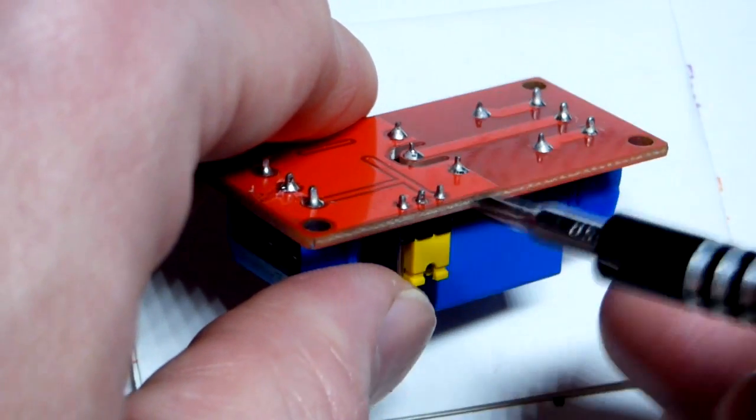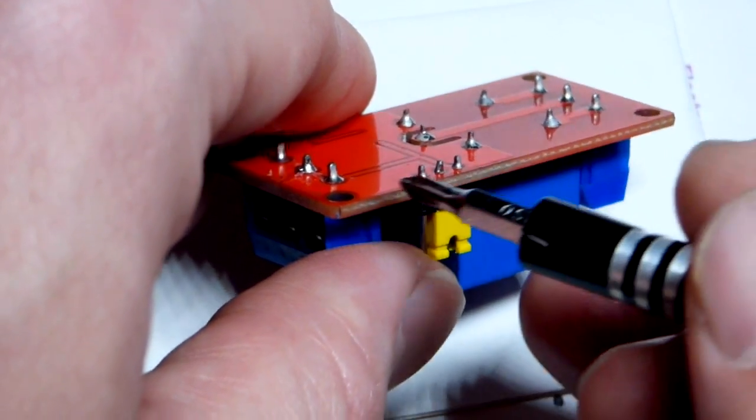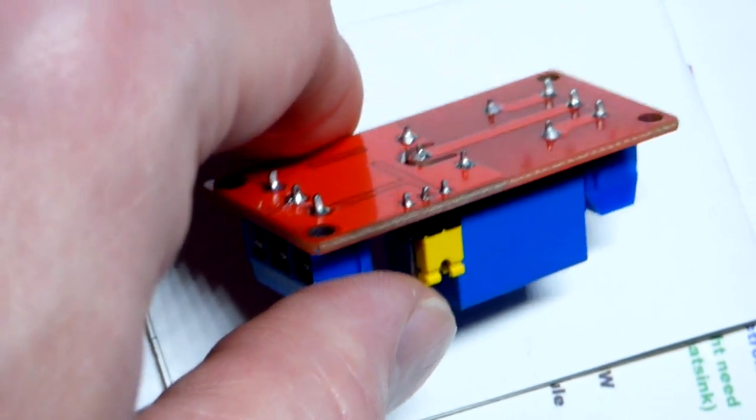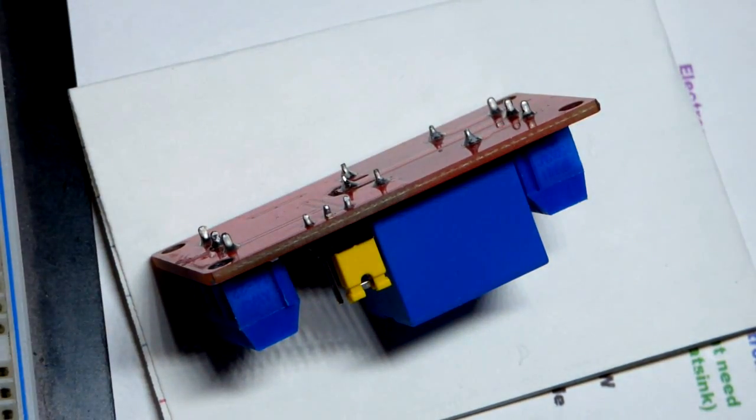The reason why I had this paper underneath the module is because we got these pins here that are soldered there long enough where they could probably make a connection in the breadboard. And I didn't want to short circuit anything.